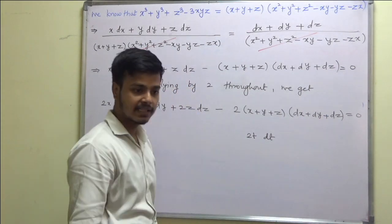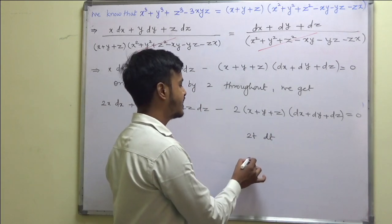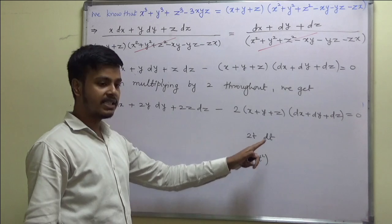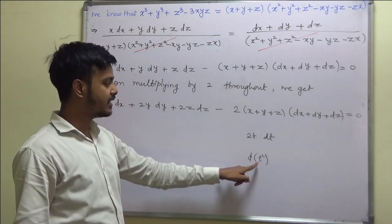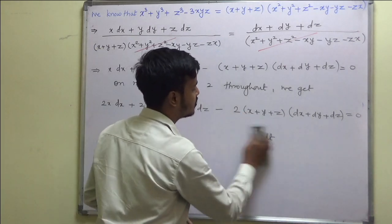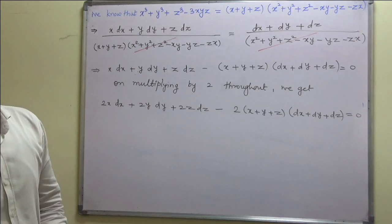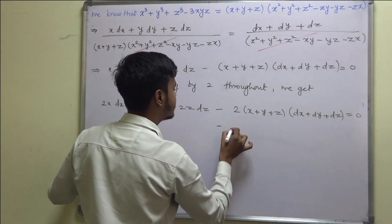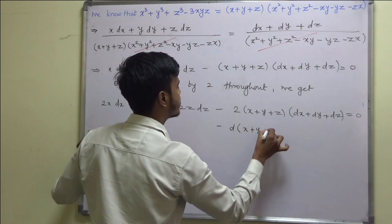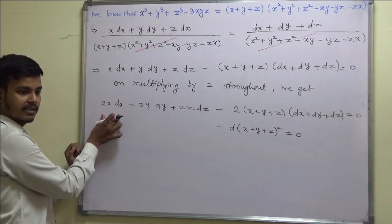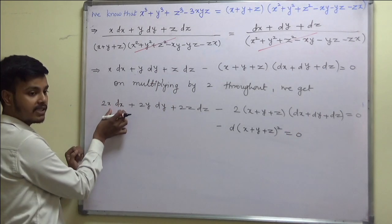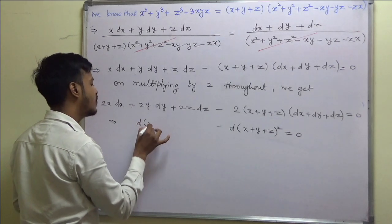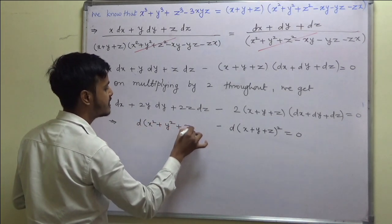If we let t = x+y+z, then (dx+dy+dz) = dt, and 2(x+y+z)(dx+dy+dz) = 2t dt = d(t²) = d((x+y+z)²). Also, 2x dx + 2y dy + 2z dz is the derivative of x² + y² + z². So this becomes d(x²+y²+z²) - d((x+y+z)²) = 0.